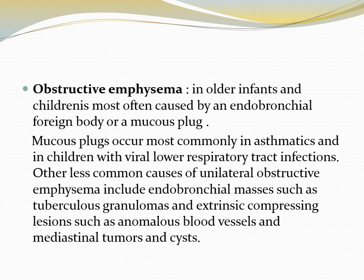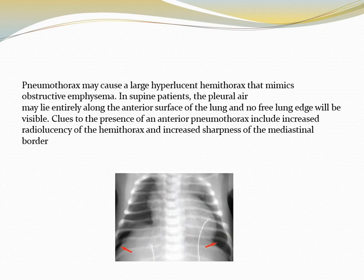Obstructive emphysema in older infants and children is most often caused by an endobronchial foreign body or mucous plaque. Mucous plaques occur most commonly in asthmatics and in children with viral respiratory tract infection. Other less common causes include endobronchial masses such as tuberculous granulomas, and extrinsic compressing lesions such as anomalous blood vessels, mediastinal tumors, and cysts. Pneumothorax may cause a large hyperlucent hemithorax that mimics obstructive emphysema. In supine patients the pleural air may lie entirely along the anterior surface of the lung with no free lung edge visible. Clues include increased radiolucency and increased sharpness of the mediastinal border.